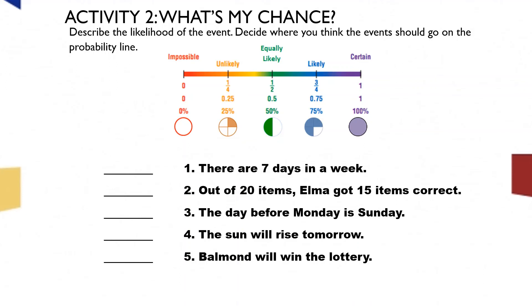Okay, now, we will check your answer. For number 1, we have here the certain. Why? Since we all know that there are 7 days in a week. So, it is 100% sure. For number 2, out of 20 items, Alma got 15 items correct. So, we have here the likely. Since, it is almost perfect.